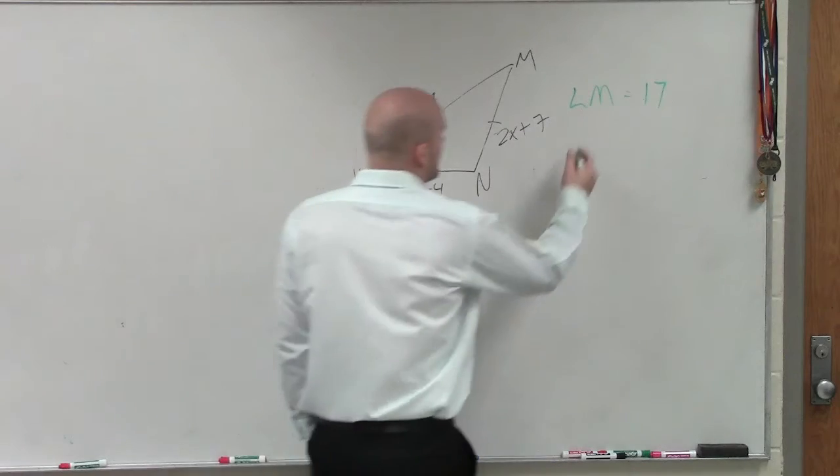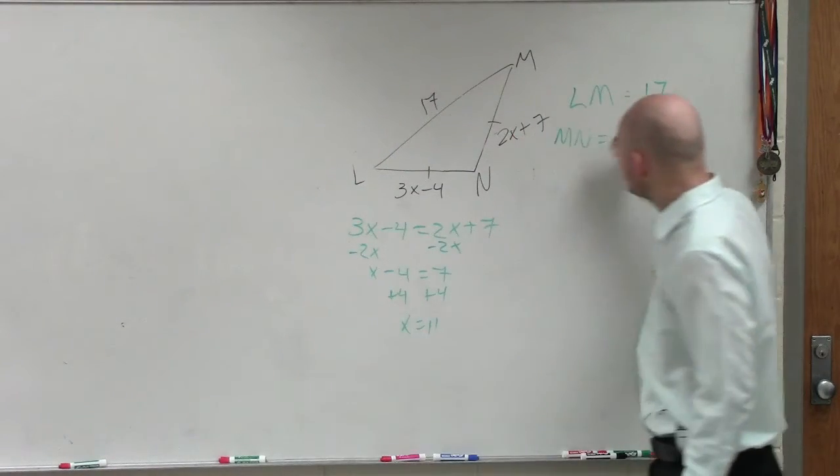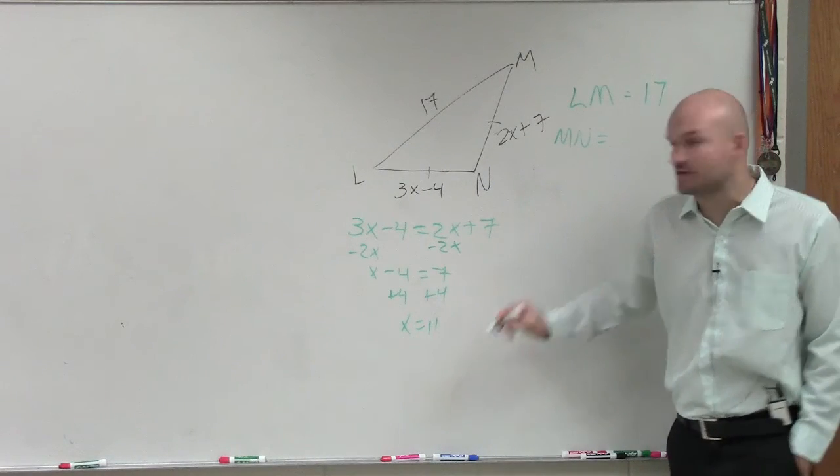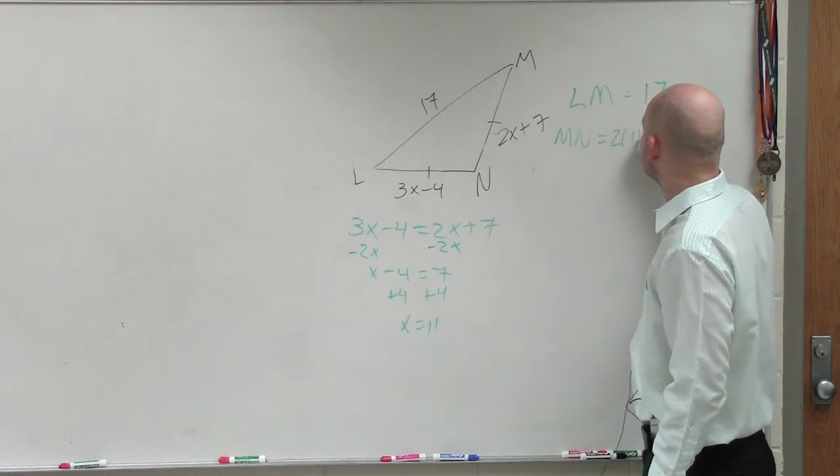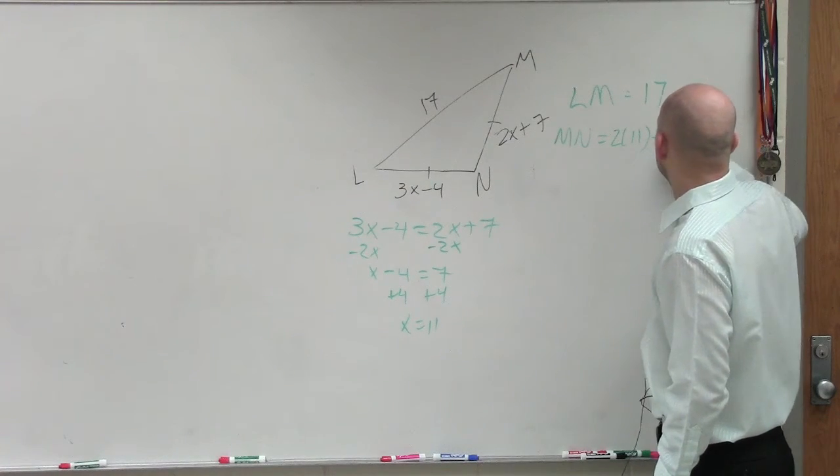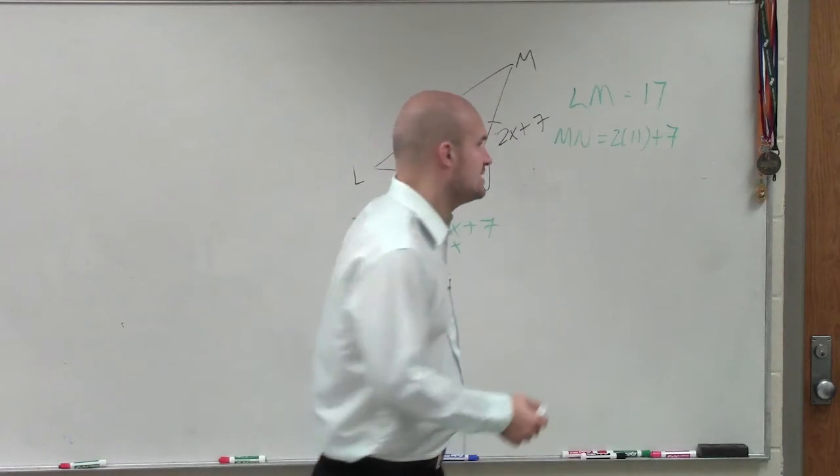But for MN, that is 2x plus 7. But now we know what x is. That's the measure of 11. So it's 2 times 11 plus 7. Well, 2 times 11 is 22 plus 7 is 29.